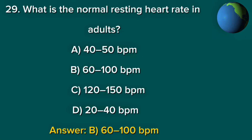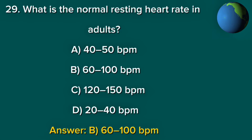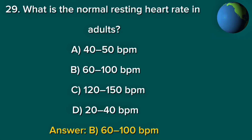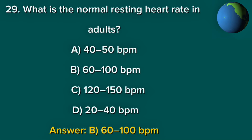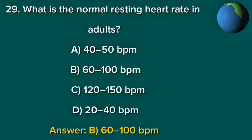Question 29. What is the normal resting heart rate in adults? A. 40-50 BPM. B. 60-100 BPM. C. 120-150 BPM. D. 20-40 BPM. Answer: B. 60-100 BPM.